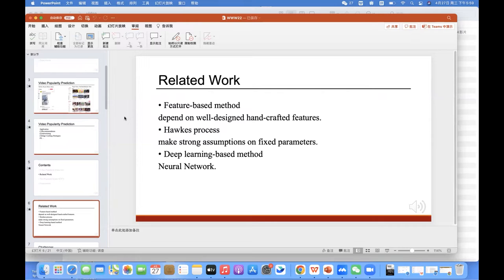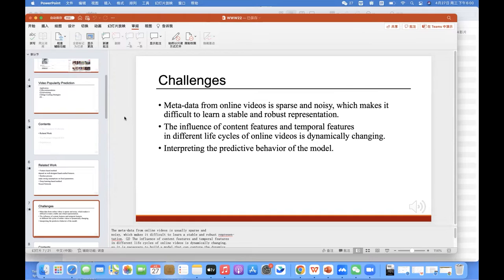There are three main popularity prediction schemes. Traditional feature-based methods mainly leverage user features, content features, temporal features, and structural features to conduct popularity prediction. However, such approaches heavily depend on well-designed handcraft features, which limits the model scalability. Some researchers performed video popularity prediction based on Hawkes process. Although such approaches do not require excessive feature engineering, they usually make strong assumptions on fixed parameters, which limits model expressiveness. Recently, a large number of deep learning-based models have been proposed to improve the performance of video popularity prediction.